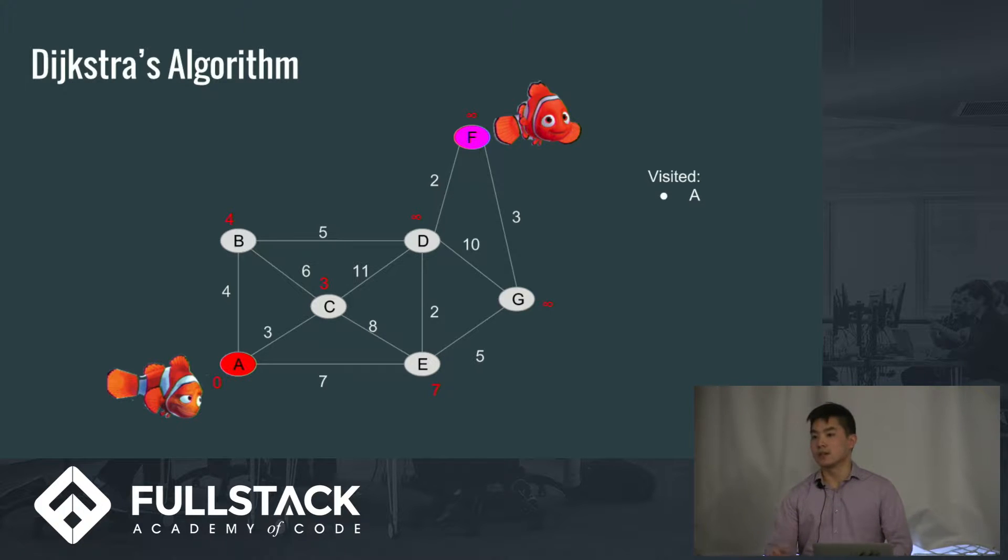Next, we visit the next unvisited vertex that has the smallest distance from the source. In this case, it's C. So we go to C and we color it red and we push it onto the array. So from here, we again go through the algorithm. We visit the unvisited vertices and we calculate your distances. So for C, you can go to B, D, and E.